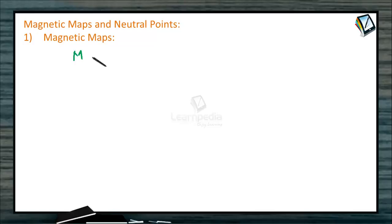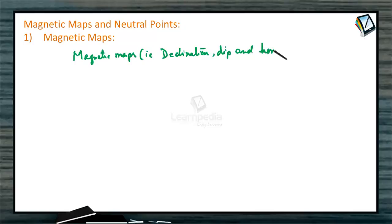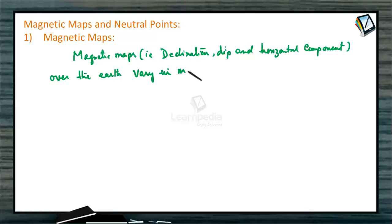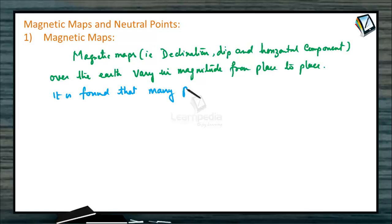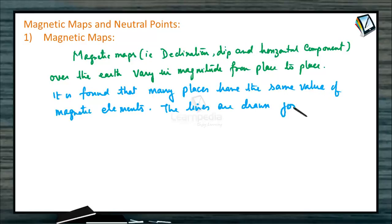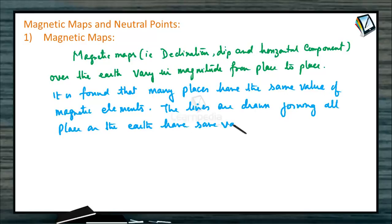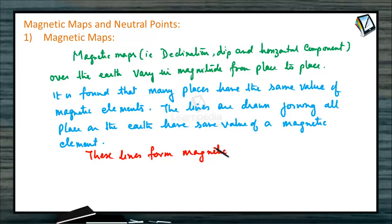So what are magnetic maps? Magnetic maps — that is declination, dip, and horizontal component over the earth — vary in magnitude from place to place. It is found that many places have the same value of magnetic elements. The lines drawn joining all places on the earth having the same value of a magnetic element form a magnetic map.